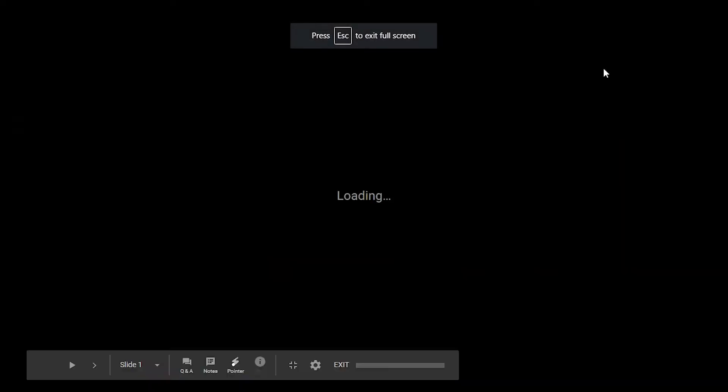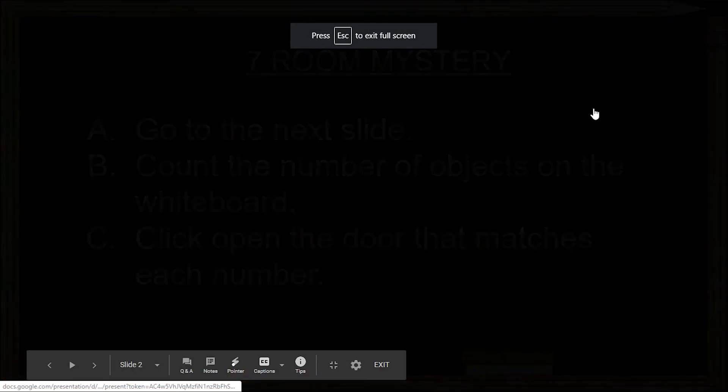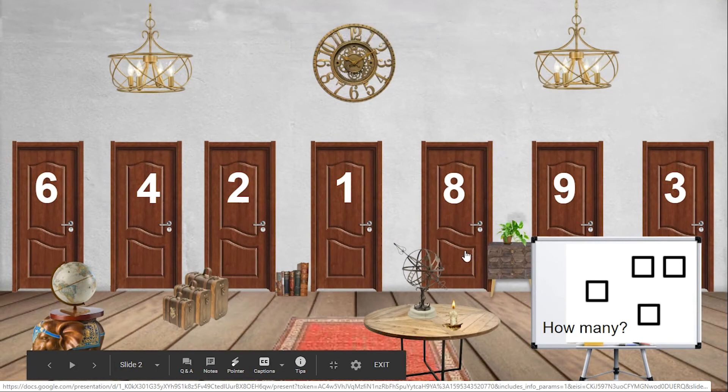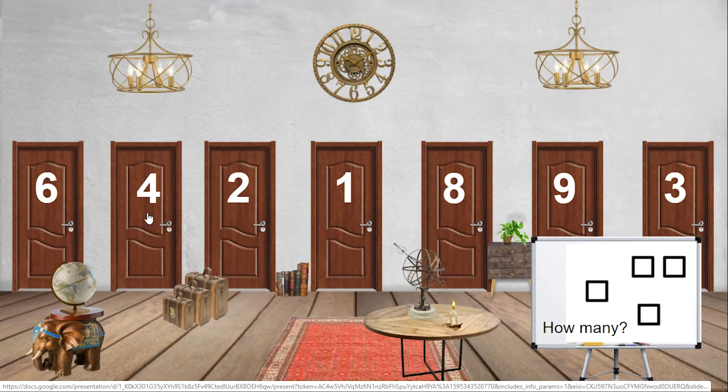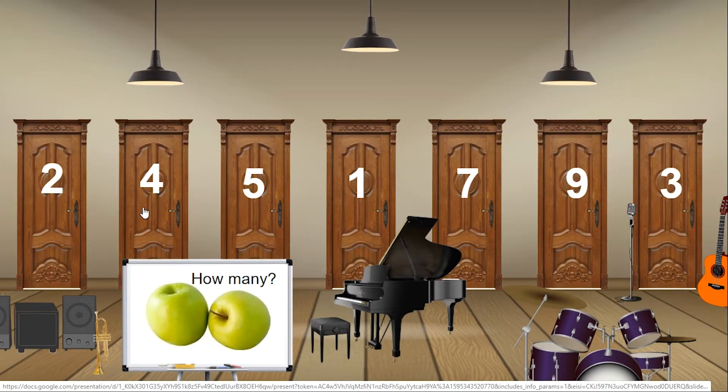If I go into the presentation mode, now you can see in this slide, I enabled only the number 4 to be clicked open, so anything else has been disabled. As you can see, nothing is moving on, so when I click on 4, it advances to the next slide.